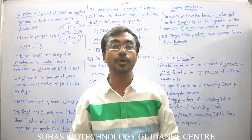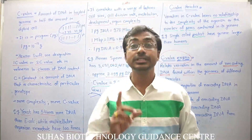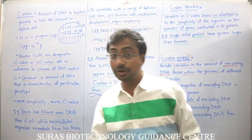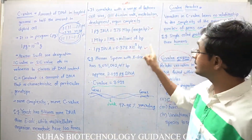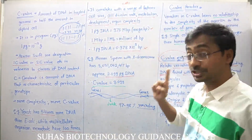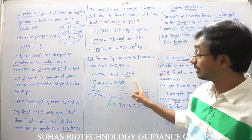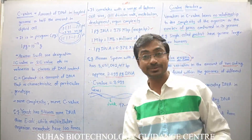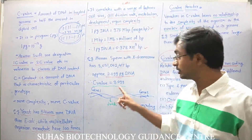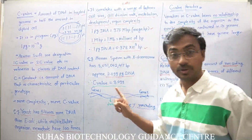So this is all about C value. One very important thing to remember is the two unit relationships — 1 picogram = 978 Mbp = 0.978 × 10⁹ base pairs — because in many comparative examples, questions are asked about C value using these conversions.